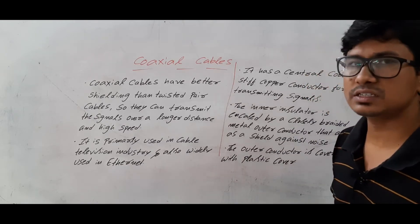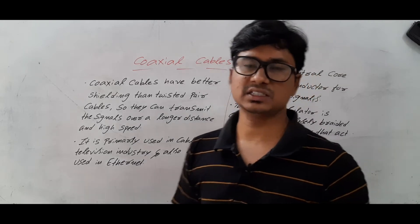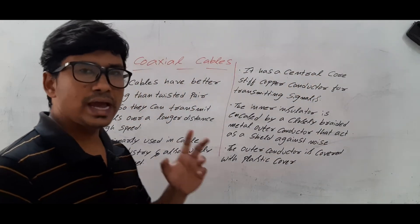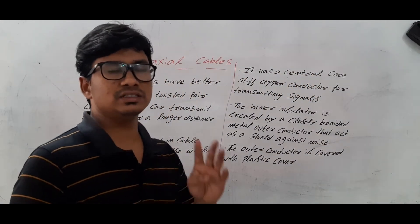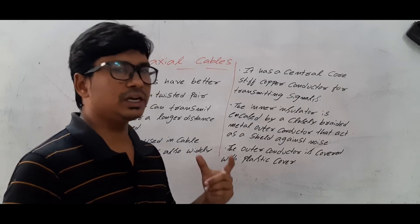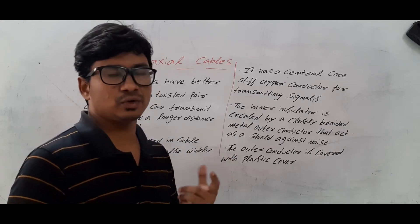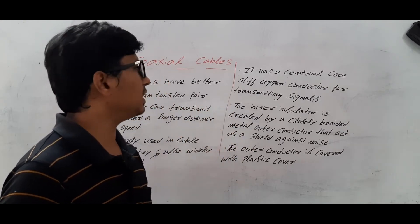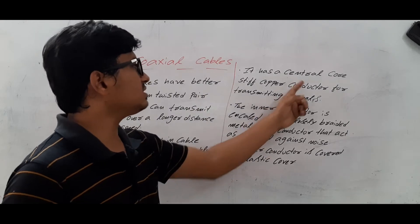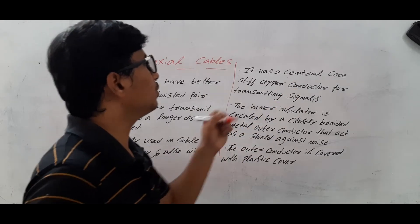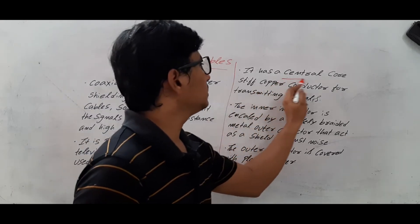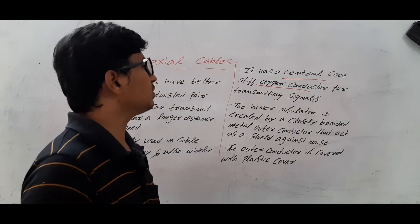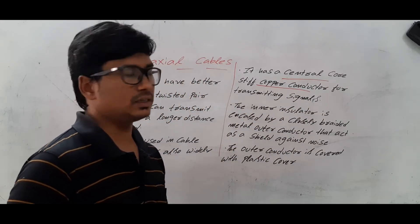Now we will discuss about the structure of a coaxial cable. The coaxial cable consists of four major parts. If you look at the structure of a coaxial cable, we will have four major parts. The first one is the central core copper conductor, which will be useful for transferring the signals.